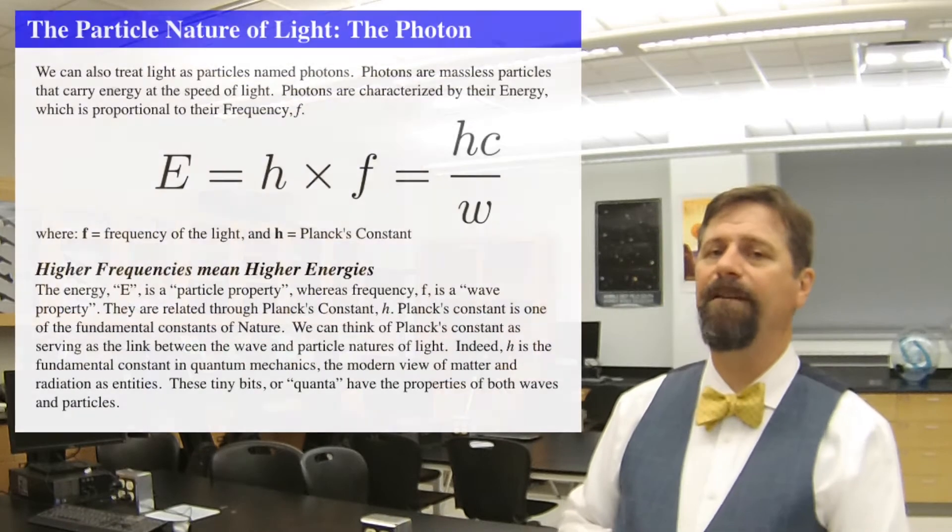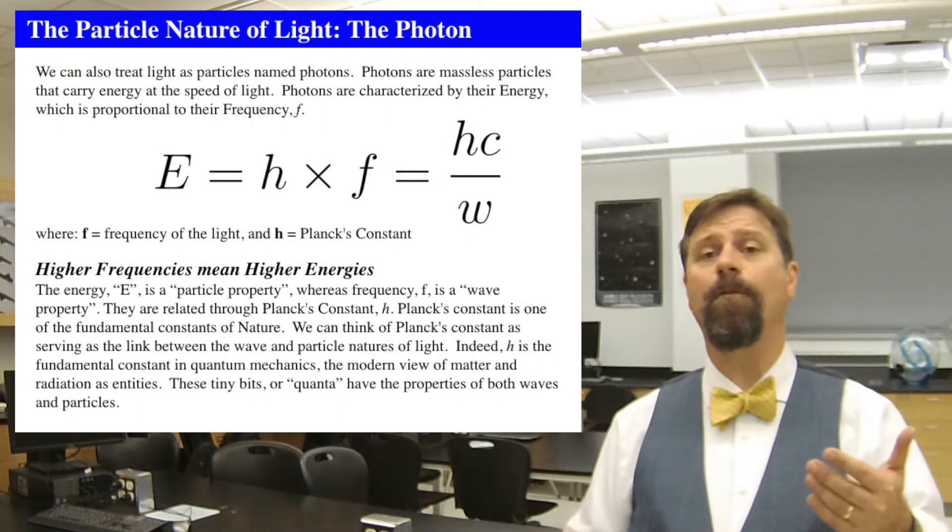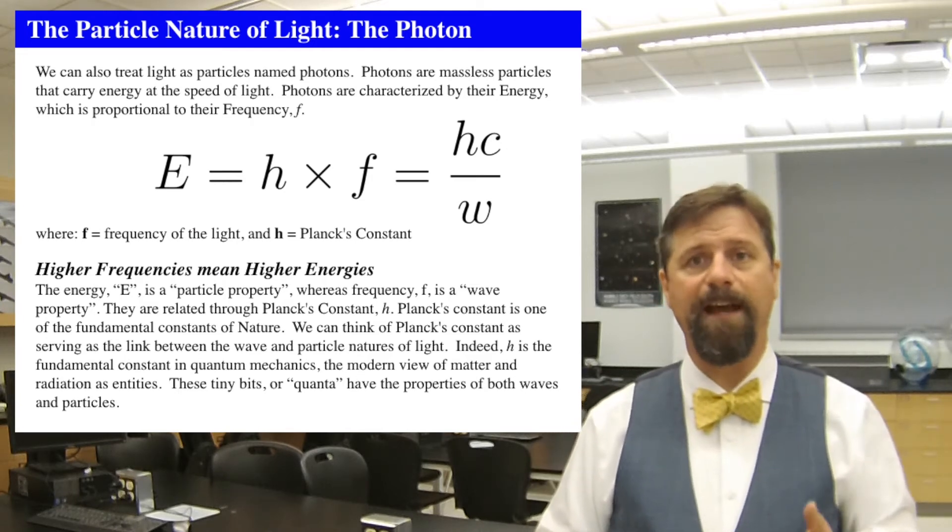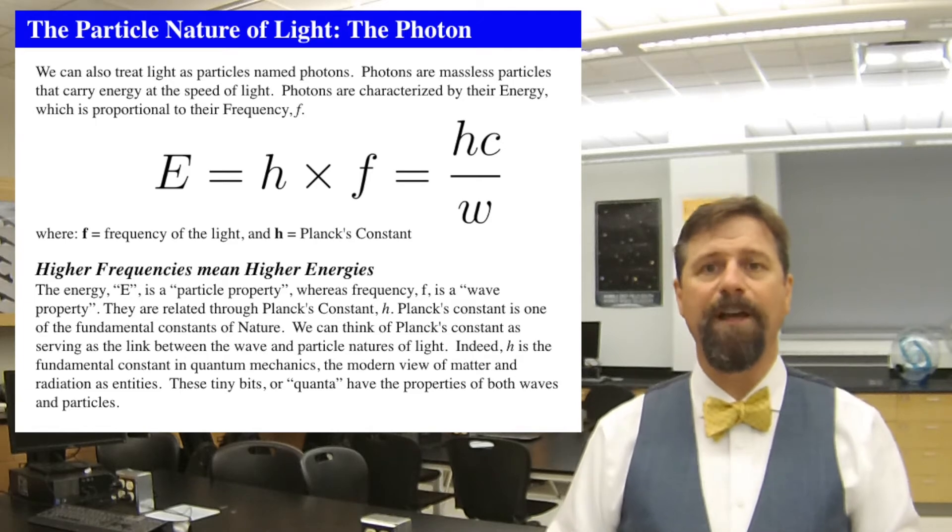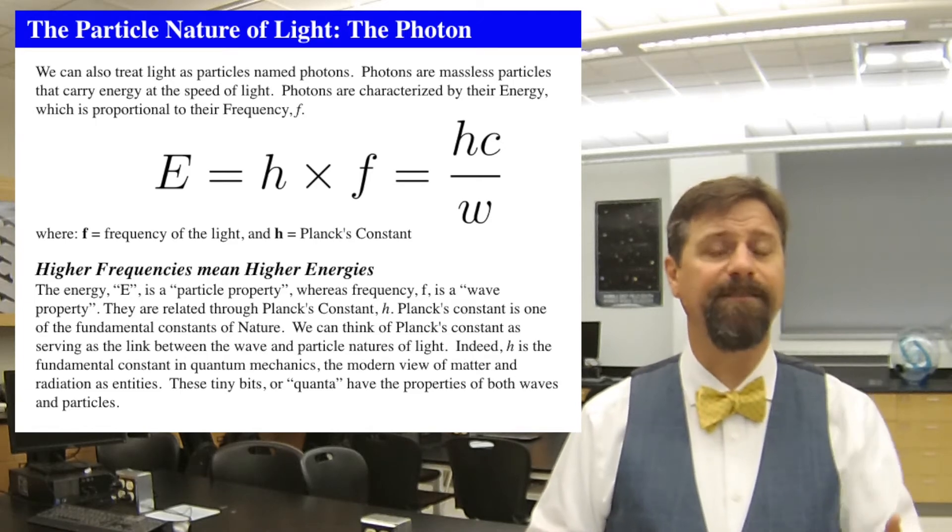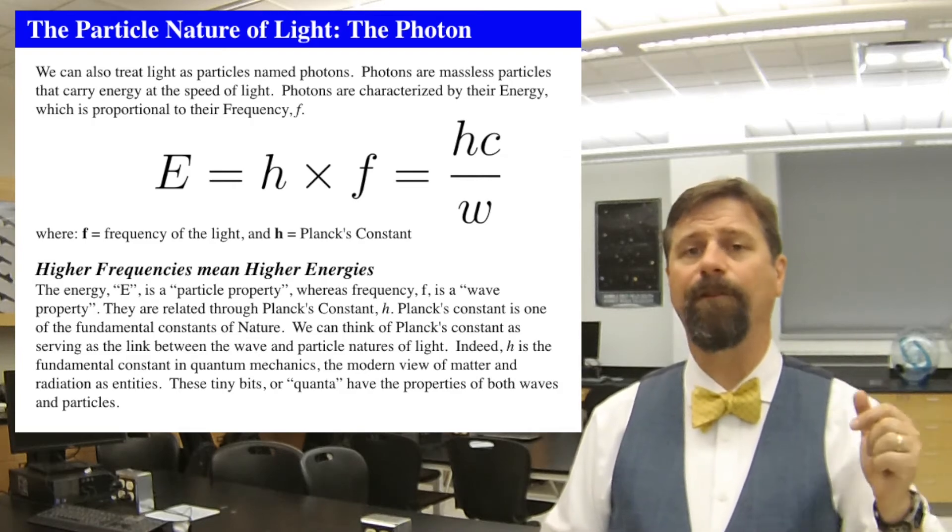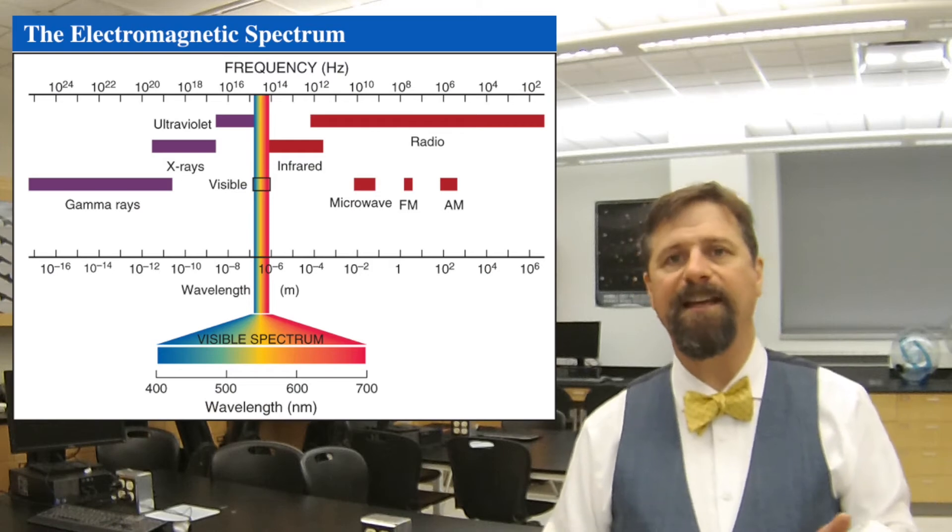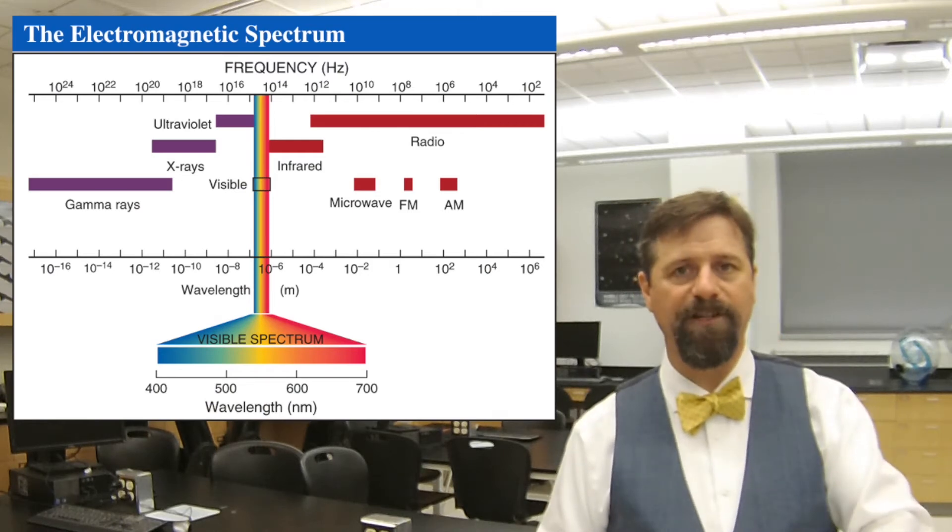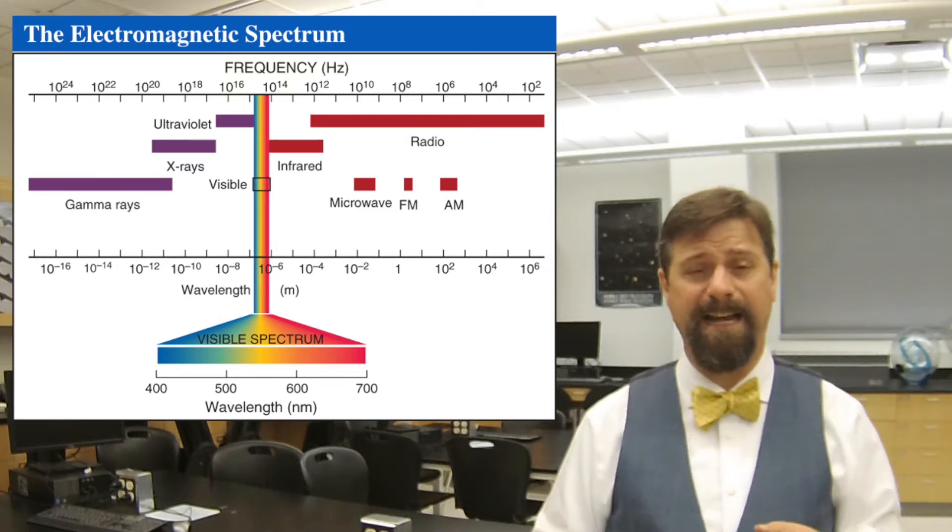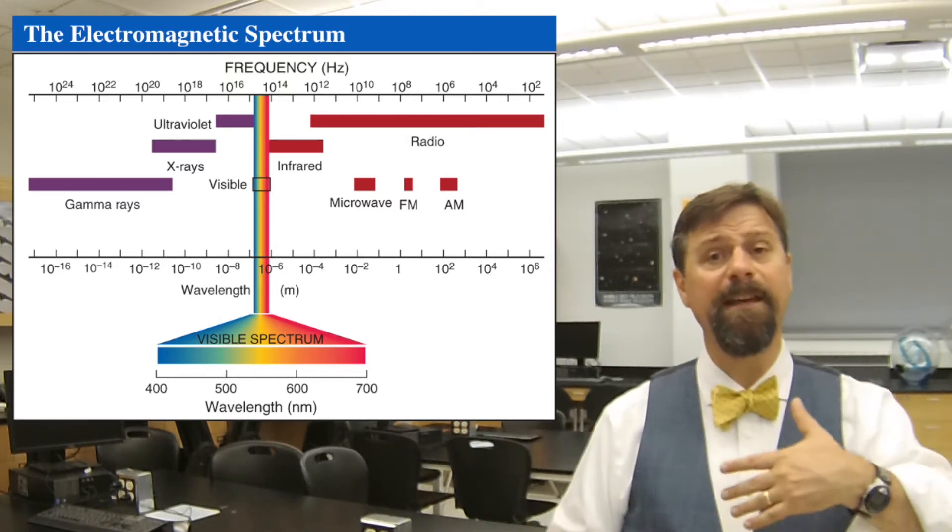Photons have a certain amount of energy. That amount of energy is related to the frequency or the wavelength. The wavelength of the photon determines its energy. Short wavelength photons have high energy. Long wavelength photons have low energy. Radio light has long wavelengths, it's low energy. Gamma ray light has short wavelengths, it has high energy.